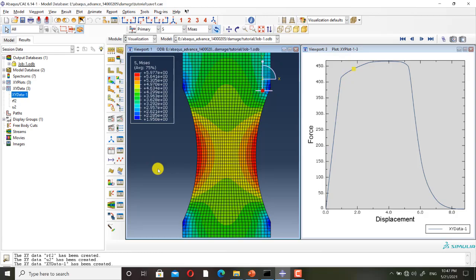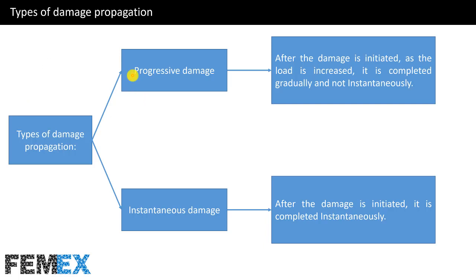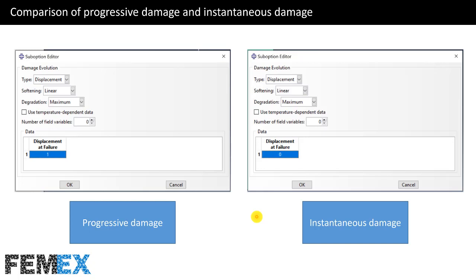We have two types of damage propagation. The first is progressive damage and the second is instantaneous damage. In progressive damage, after the damage is initiated, as the load is increased, it is completed gradually and not instantaneously. I used progressive damage in the simulation of the tensile test — you saw that elements are damaged gradually and not suddenly. In instantaneous damage, after the damage is initiated, it is completed instantaneously. If you want to define instantaneous damage, you must enter zero for displacement at failure or fracture energy. We have two types of damage evolution based on displacement or based on fracture energy, and if you select either of them, you must set the value equal to zero.